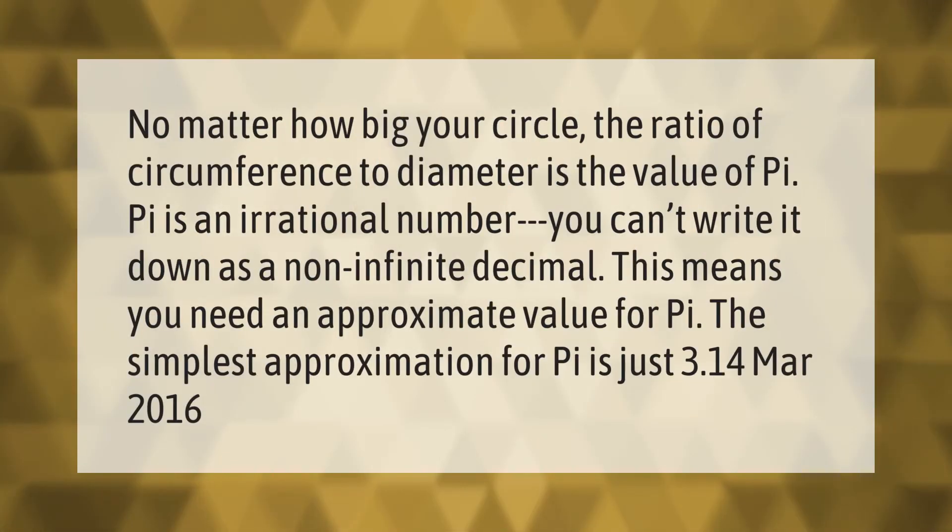No matter how big your circle, the ratio of circumference to diameter is the value of pi. Pi is an irrational number—you can't write it down as a finite decimal.